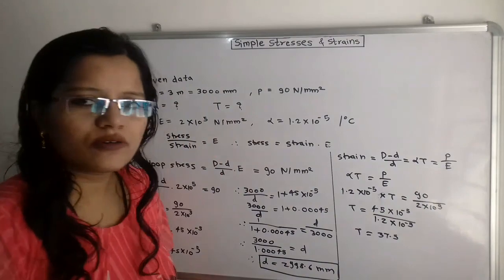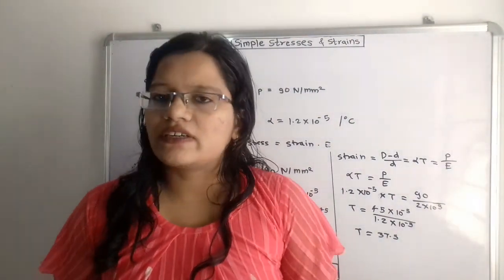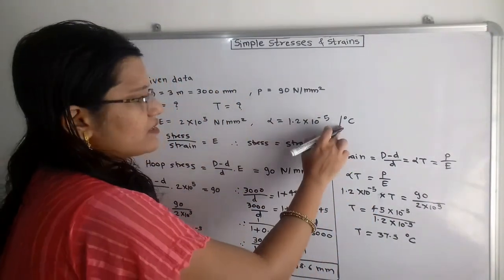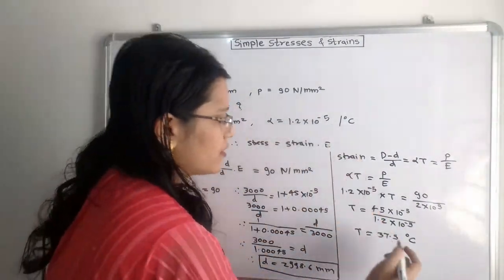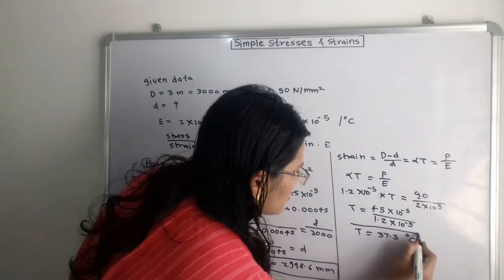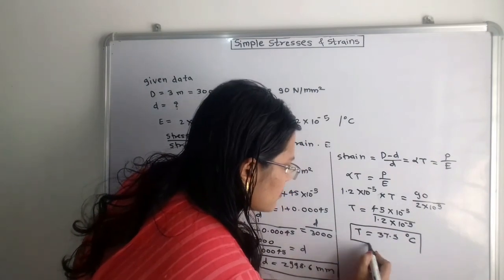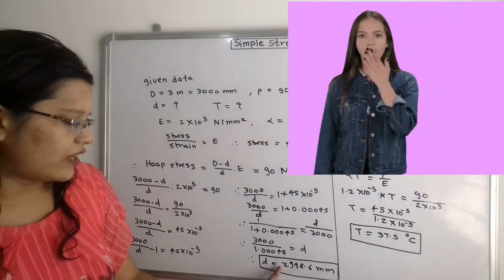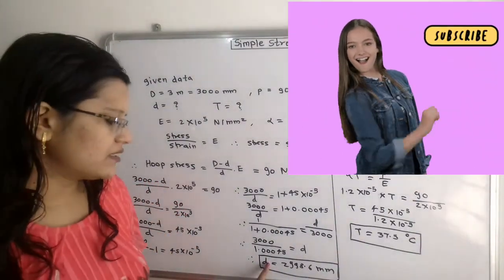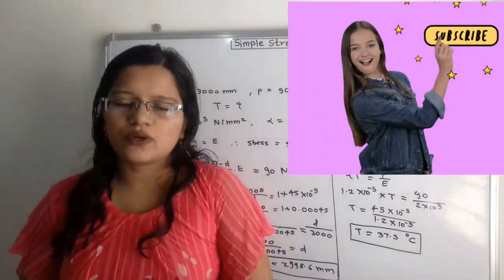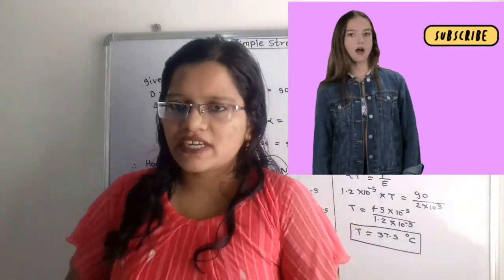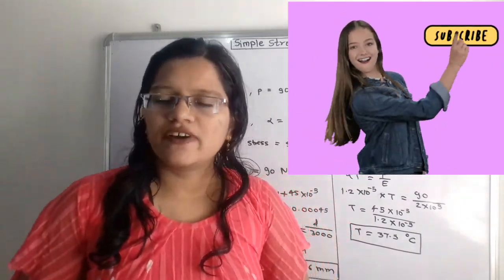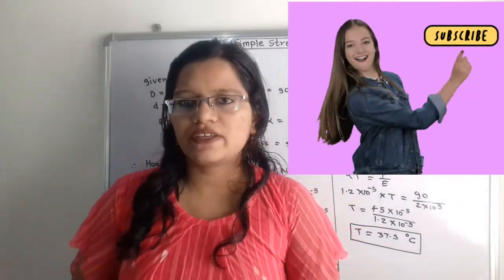The unit of temperature is degree Celsius, since alpha is also in per degree Celsius. So T = 37.5°C. We have calculated both answers: the internal diameter of the steel tire is 2998.6 mm, and the temperature to which the tire must be heated is 37.5°C. Please like this lecture, share it with your friends, and subscribe to my channel. Thank you.